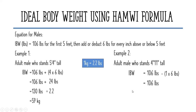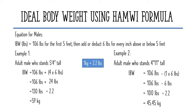106 minus 6 pounds equals 100 pounds. To convert to kilograms, divide 100 by 2.2. The ideal body weight for an adult male who stands 4 feet and 11 inches tall is 45.45 kilograms.